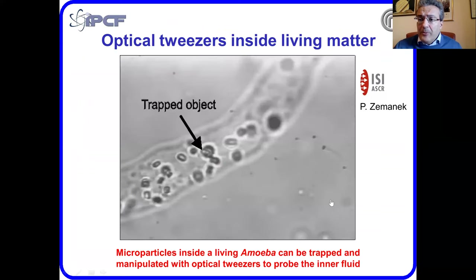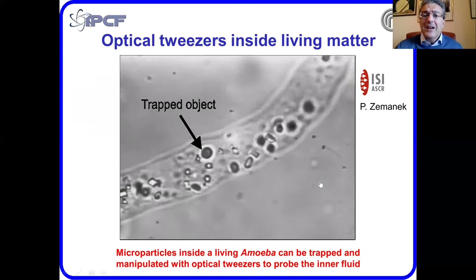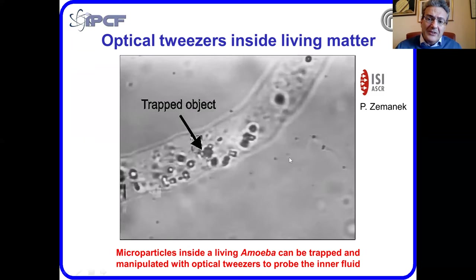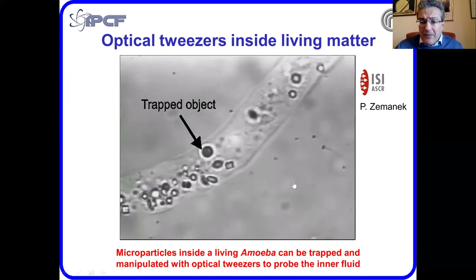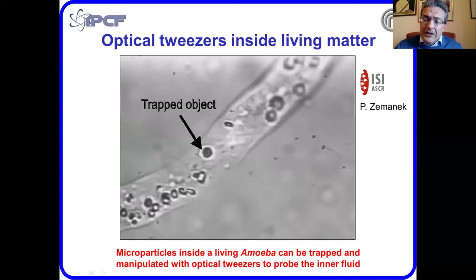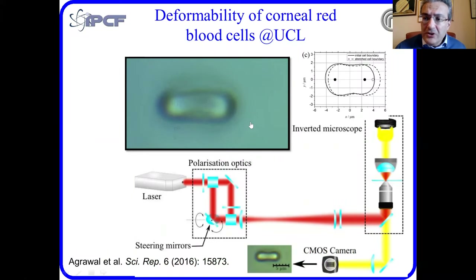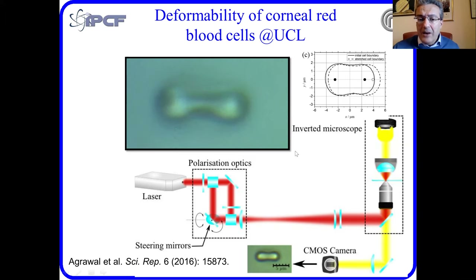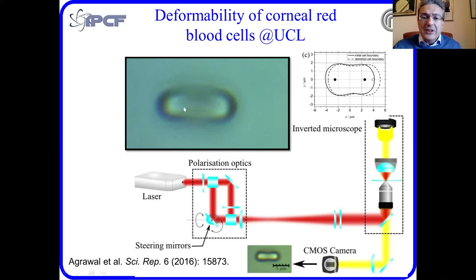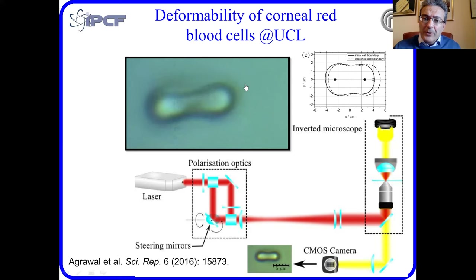Here are some examples of manipulation and trapping capabilities of optical tweezers. You can trap a particle or some matter inside a cell, probing the viscoelasticity of the material inside a large cell — inside living matter, such as an amoeba. This is an application brought forward by Pavel Zemanek's group in Brno. Another striking example is to use the capability of optical tweezers to pinch and stretch cells. Here, the UCL group of Phil Jones uses a double beam to stretch red blood cells, and through a soft matter model, extracts the elastic properties of the red blood cell.